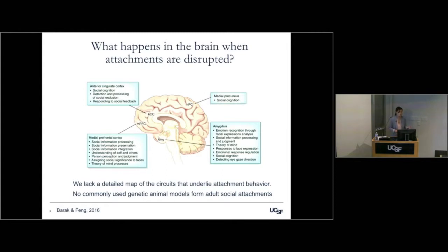These are large areas of the brain — places in cortex and the amygdala that seem to mediate a large number of different aspects of social behavior. This gives us a pretty general view, but we lack a detailed map of the circuits that underlie a lot of aspects of social behavior.